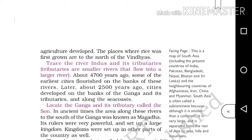What do we mean by tributary? Tributaries are small rivers. Here, the River Indus is the large river and there are several small rivers that flow into it. These small rivers are known as tributaries. The large river is River Indus, and the small rivers that flow into River Indus are known as tributaries. This happened almost 4700 years ago.